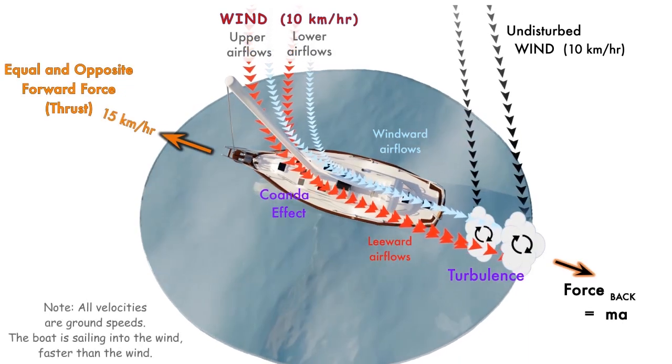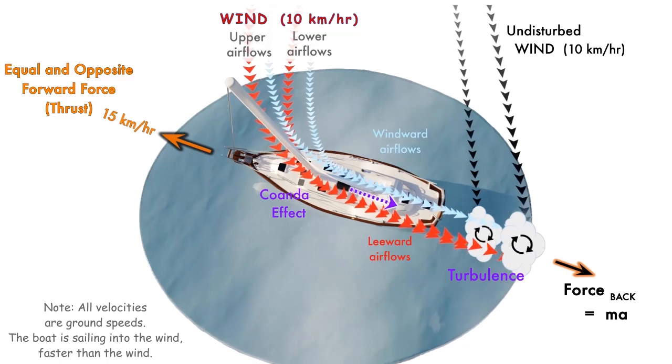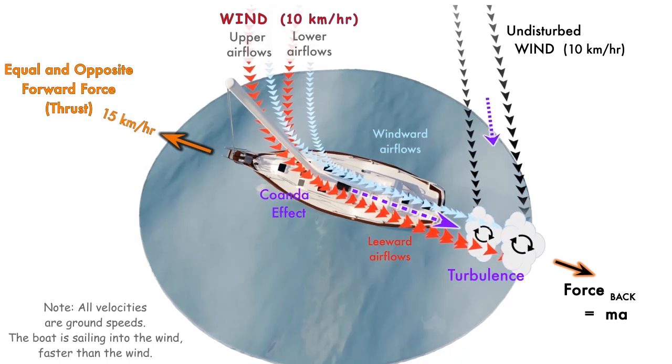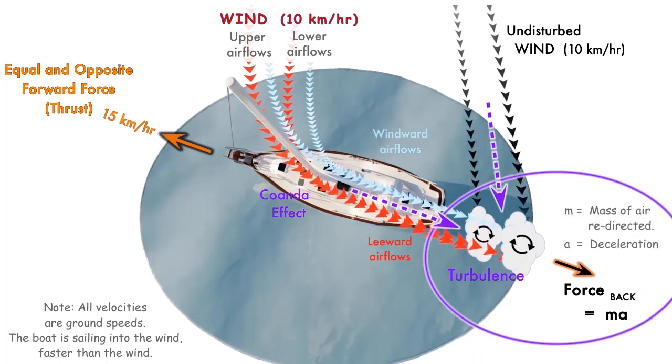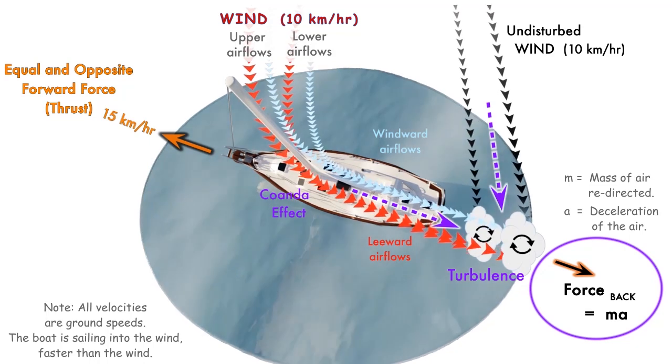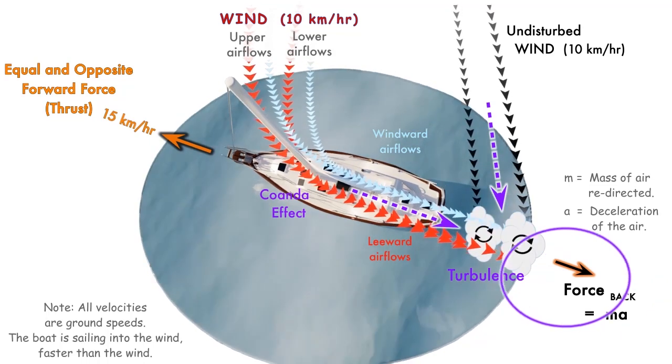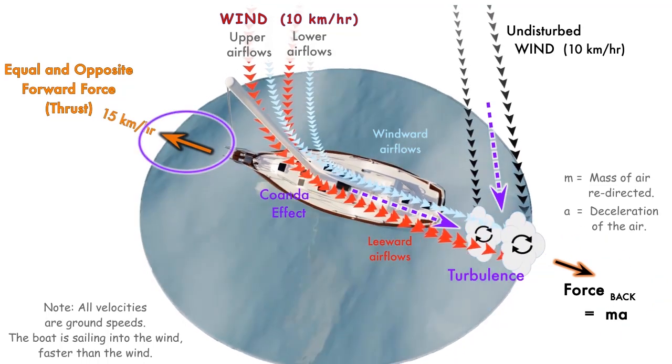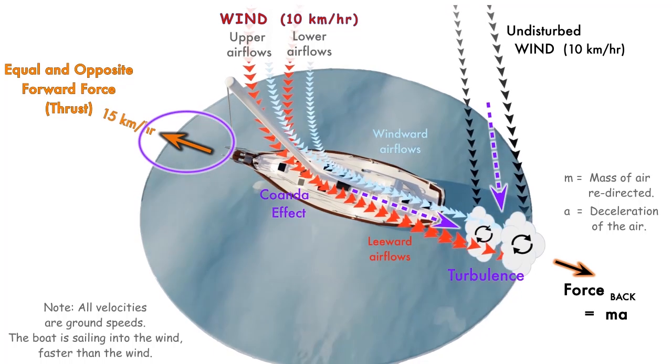At the trailing edge of the sail, the redirected airflow pushes against the oncoming wind, decelerating and creating turbulence. According to Newton's laws of motion, the backward force generated equals the reactive, equal and opposite forward force.